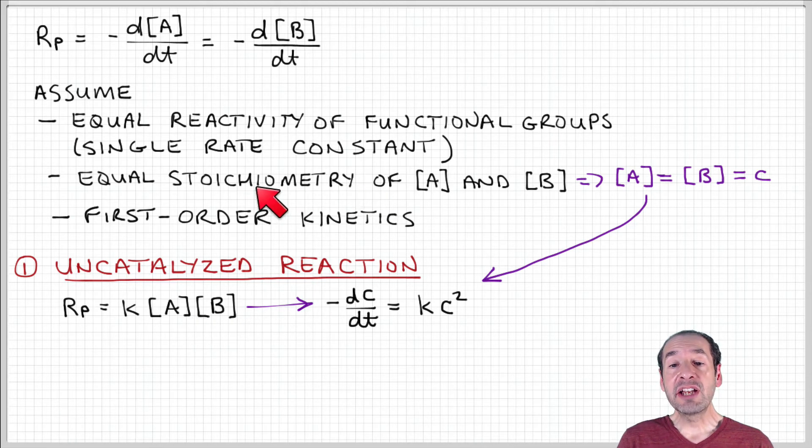Since I've assumed equal stoichiometry, I can simplify by calling those concentrations equal to a common quantity C. Then the rate of consumption of monomer equals this rate constant times C squared.